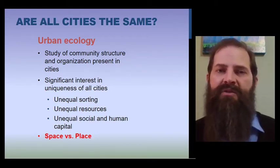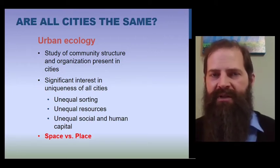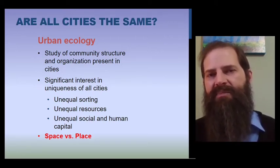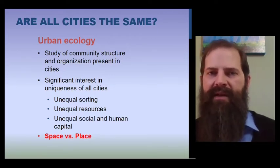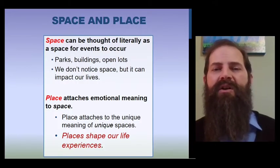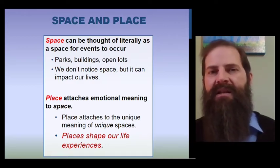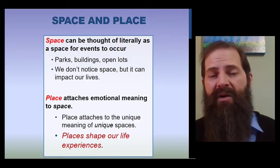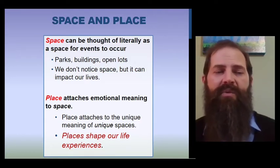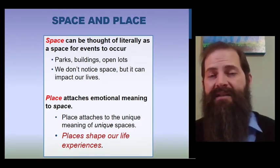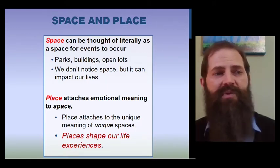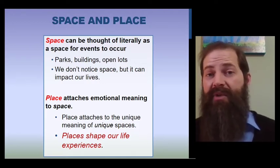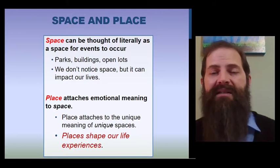Urban ecologists like to break down resources into smaller chunks to make sense of them, and they start by splitting up something they call space from something they call place. Space is the easier of the two to explain. Space refers to literally any space in a city where you might live or be that provides an area where an event can occur — everything from buildings to parks, roads, and open lots. The whole idea with space is that it's pretty mundane and boring; it's just there.